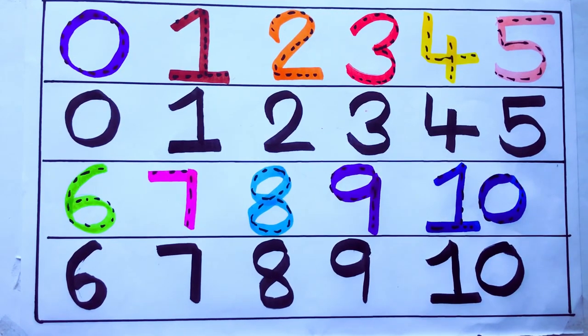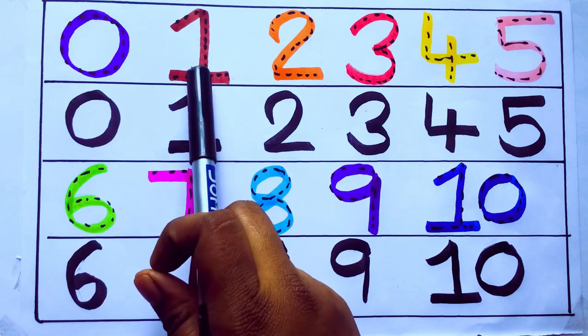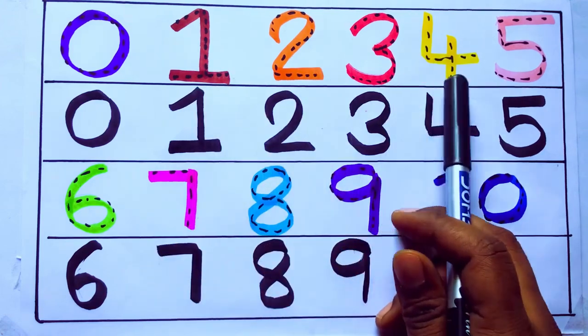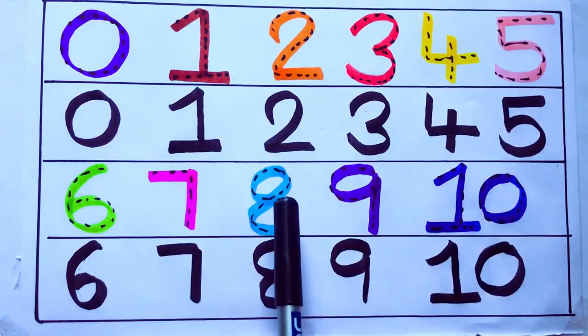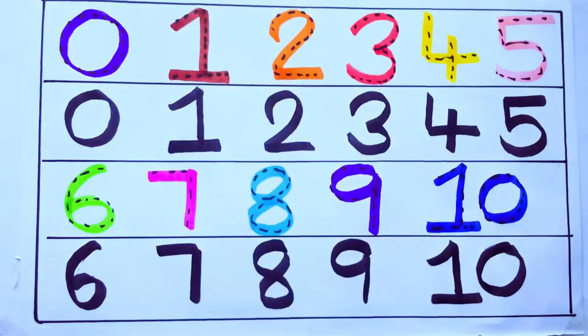1 second learning numbers. 0, 1, 2, 3, 4, 5, 6, 7, 8, 9, 10. Okay. Bye kids.